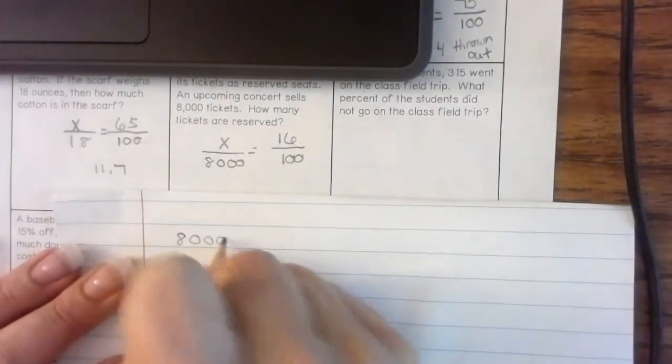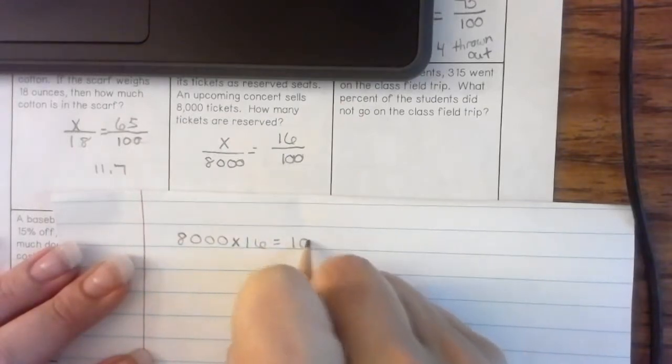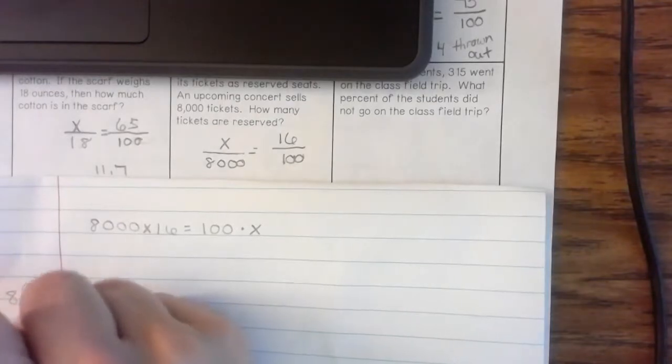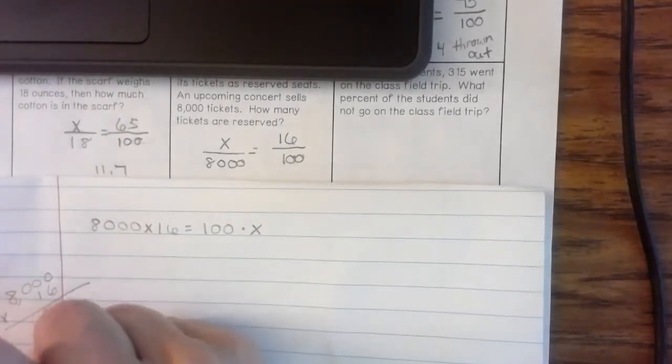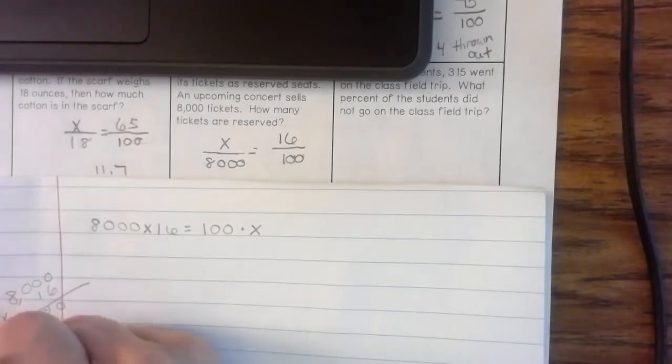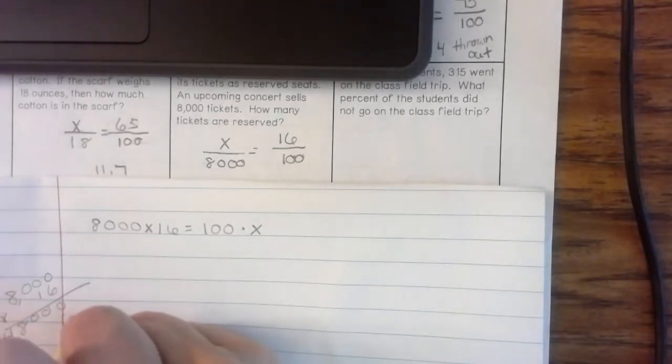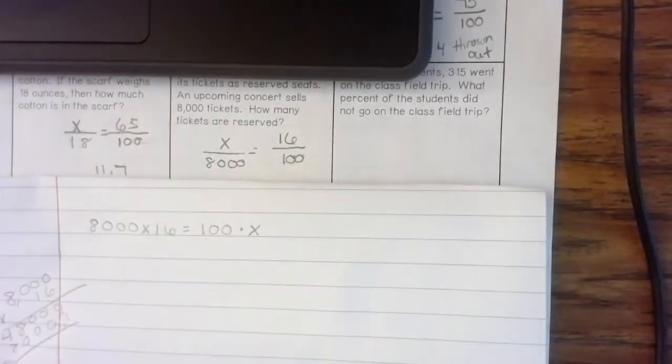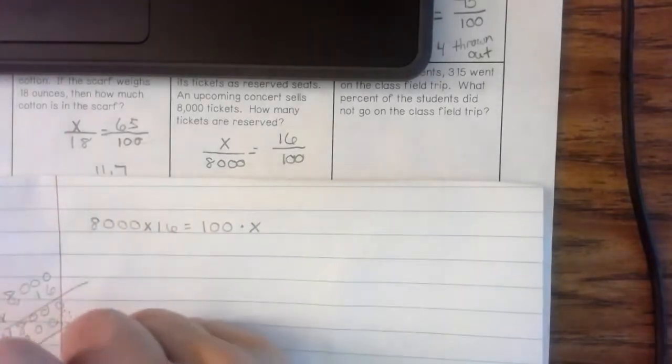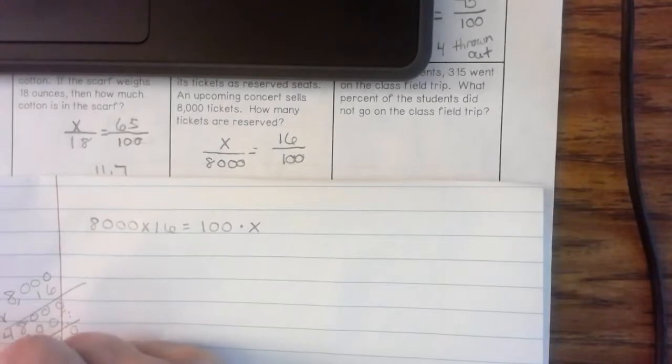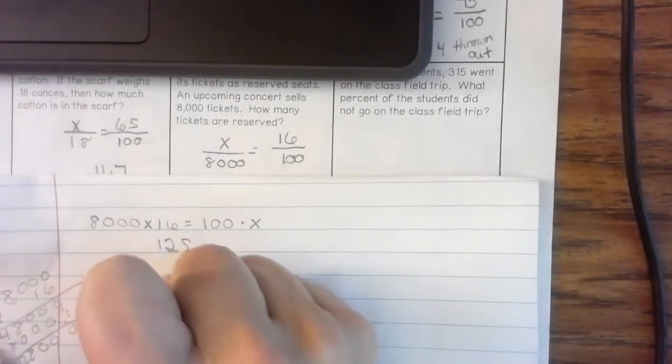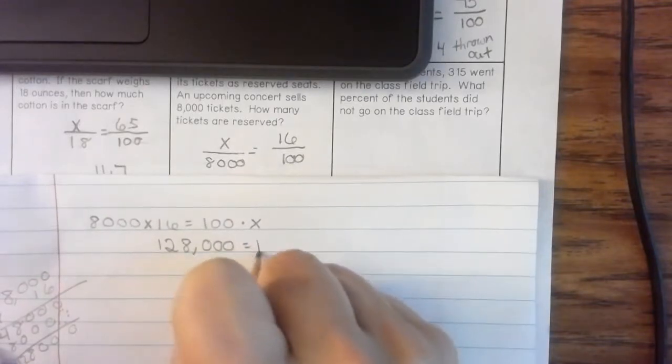So, I'm going to do 8,000 times 16 equals 100 times X. Guys, we know. We're going to come down here. 0, 0, 0, 48. Placeholder, because I'm now in the tens place. 0, 0, 0, 8. And that's 12. So, that's going to be 128,000 equals 100X.